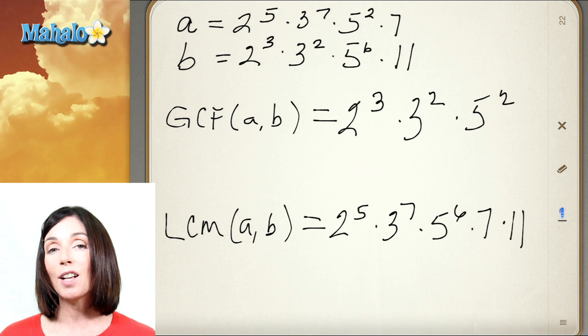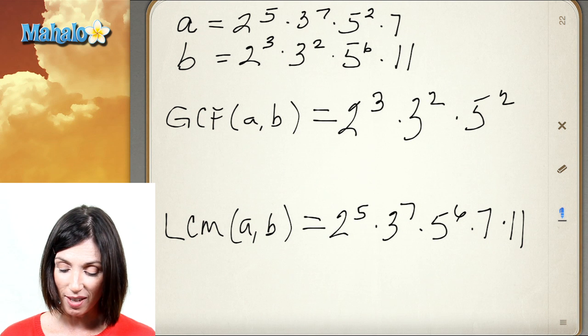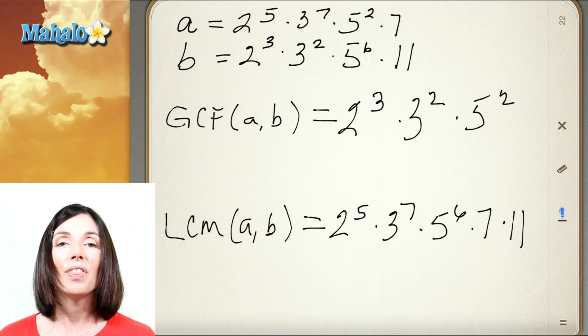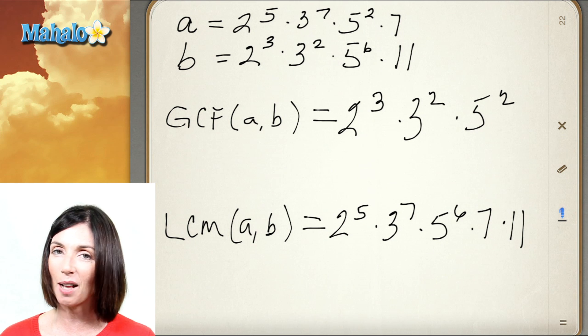So the least common multiple of these two numbers A and B is 2 to the fifth times 3 to the seventh times 5 to the sixth times 7 times 11. That's how you use prime factorizations to find greatest common factors and least common multiples.